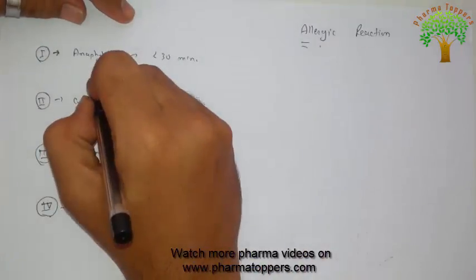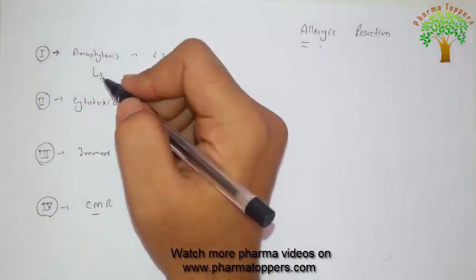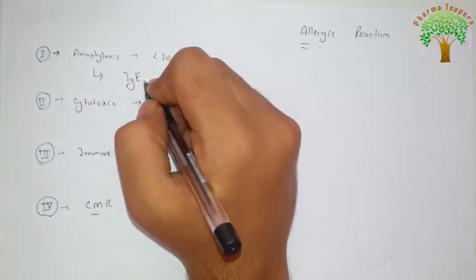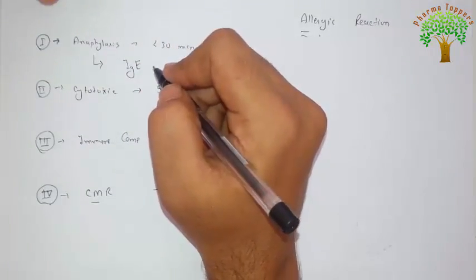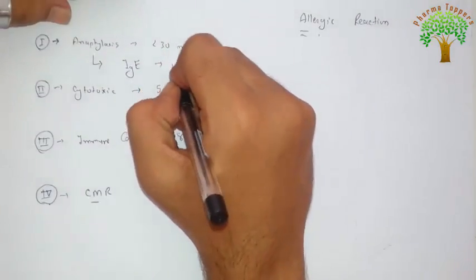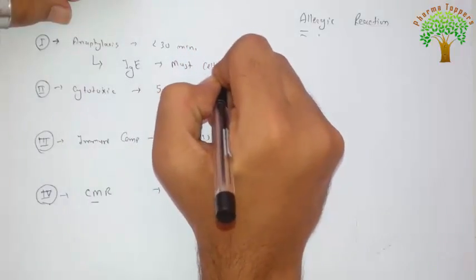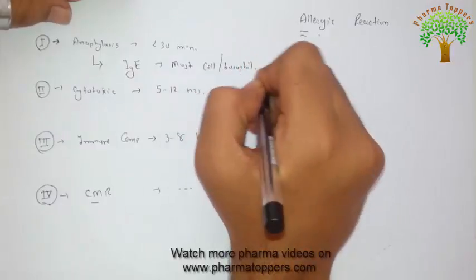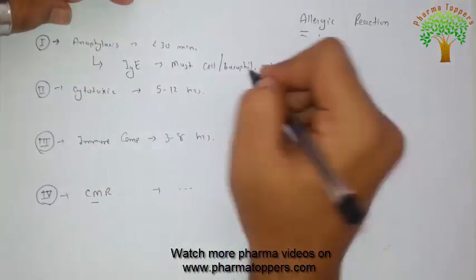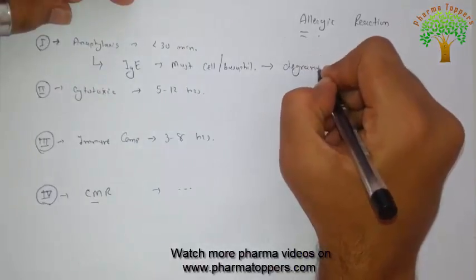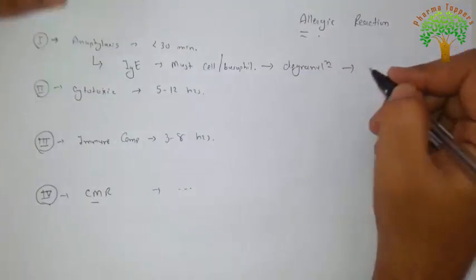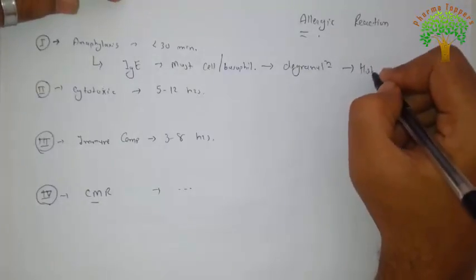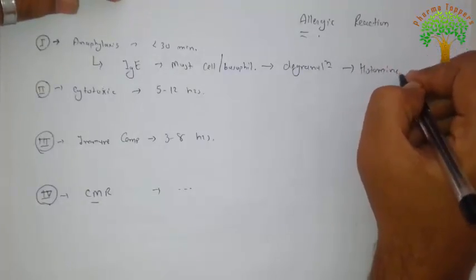In anaphylaxis, IgE is formed and binds to the mast cells. Once it binds to the mast cells or basophils, it causes degranulation of the granules — meaning the breakdown of granules takes place — which releases histamine and shows an exaggerated response.